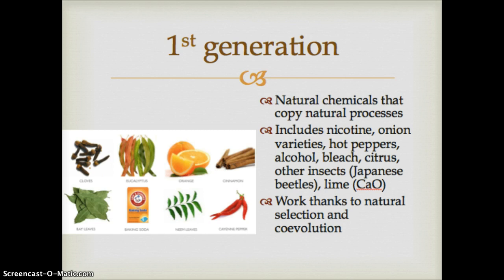We do have a long history of pesticide use. One category is called first generation pesticides — these are things we have known about for a long time, any natural chemical that copies nature. Some farmers have known that planting a row of marigolds next to your tomato plants works because marigolds give off a scent that some pests don't like. Nicotine and onion varieties are also used because they give off scents certain insects don't like. You can use other insects like Japanese beetles to eat other beetles, or apply lime — calcium oxide — in certain situations. These things work because of evolution; through natural selection and co-evolution, they've developed into a working relationship with other organisms.